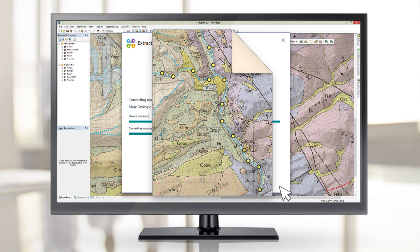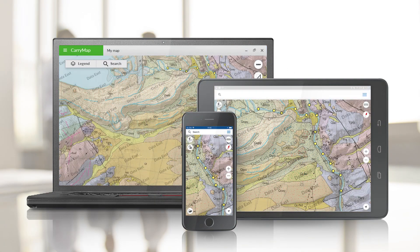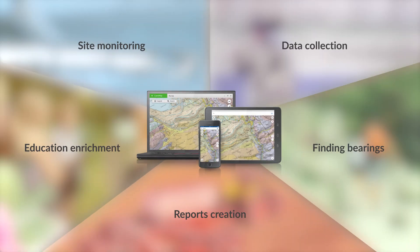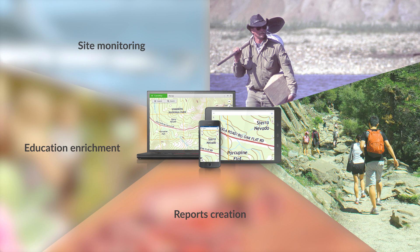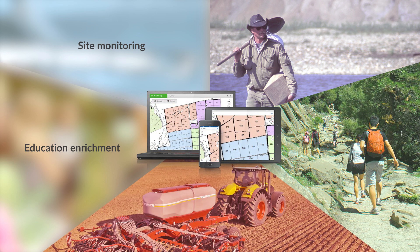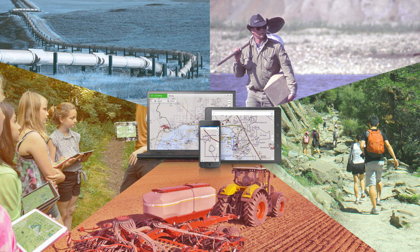Now your mobile maps can be used not only by professionals, but are also available to a broad audience without specific GIS skills. Have a look at a few selected case studies: collect data in the field during geological exploration works; find bearings even in remote locations using your mobile map as an electronic directory or as a travel guide in a national park; generate reports based on data regarding the concentration of chemical elements in soils during farmland inspection; use mobile maps as additional interactive media for self-study or during outdoor lessons; carry out site monitoring of electricity transmission lines or oil and gas pipelines.